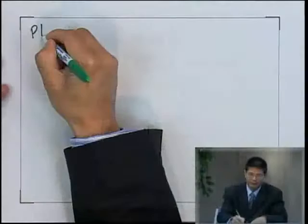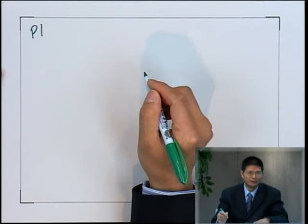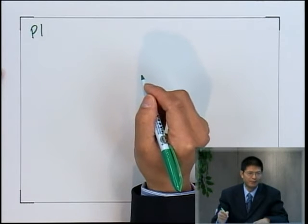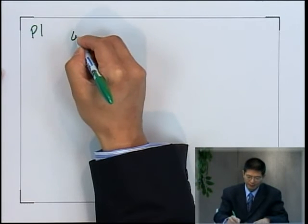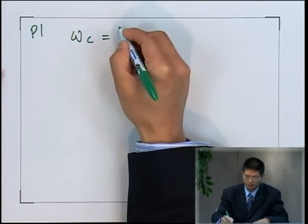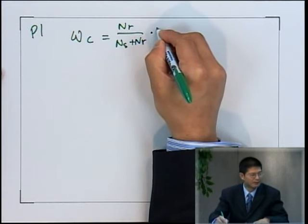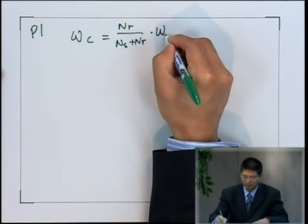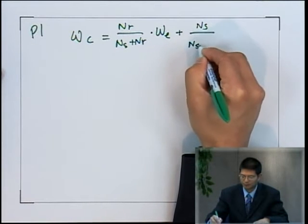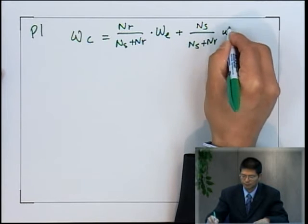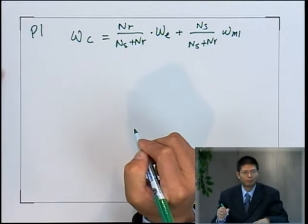On planetary gear number one, we have three speeds: engine speed, motor-one speed, and carrier speed. Carrier speed is proportional to the final drive speed. So we can write: carrier speed equals a ratio times engine speed, plus electrical motor-one speed (omega_M1) which is connected to the sun gear.